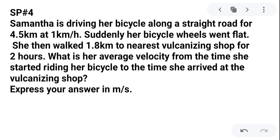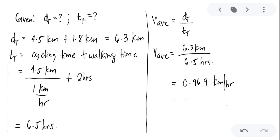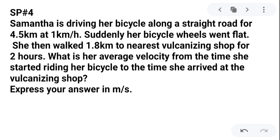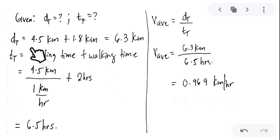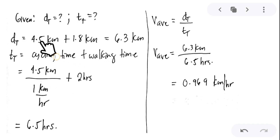Sample problem number 4 involves Samantha, one of my former students. Samantha is driving her bicycle along a straight road for 4.5 kilometers at 1 kilometer per hour. Suddenly, her bicycle wheels went flat. She then walked 1.8 kilometers to the nearest vulcanizing shop for 2 hours. What is her average velocity from the time she started riding her bicycle to the time she arrived at the vulcanizing shop? The total displacement is 4.5 kilometers plus 1.8 kilometers, which equals 6.3 kilometers.